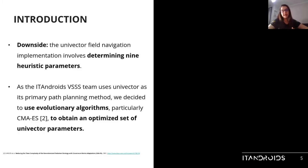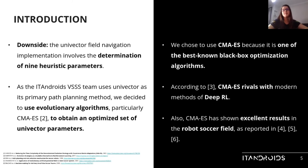A downside of univector is that its implementation involves determining nine heuristic parameters. As the Eat Android VSSS team uses univector as its primary path planning method, we decided to use evolutionary algorithms, particularly CMA-ES, to obtain an optimized set of univector parameters. We chose to use CMA-ES because it is one of the best-known black box optimization algorithms. According to OpenAI, it rivals modern methods of deep reinforcement learning. Also, it has shown excellent results in the robot soccer field.